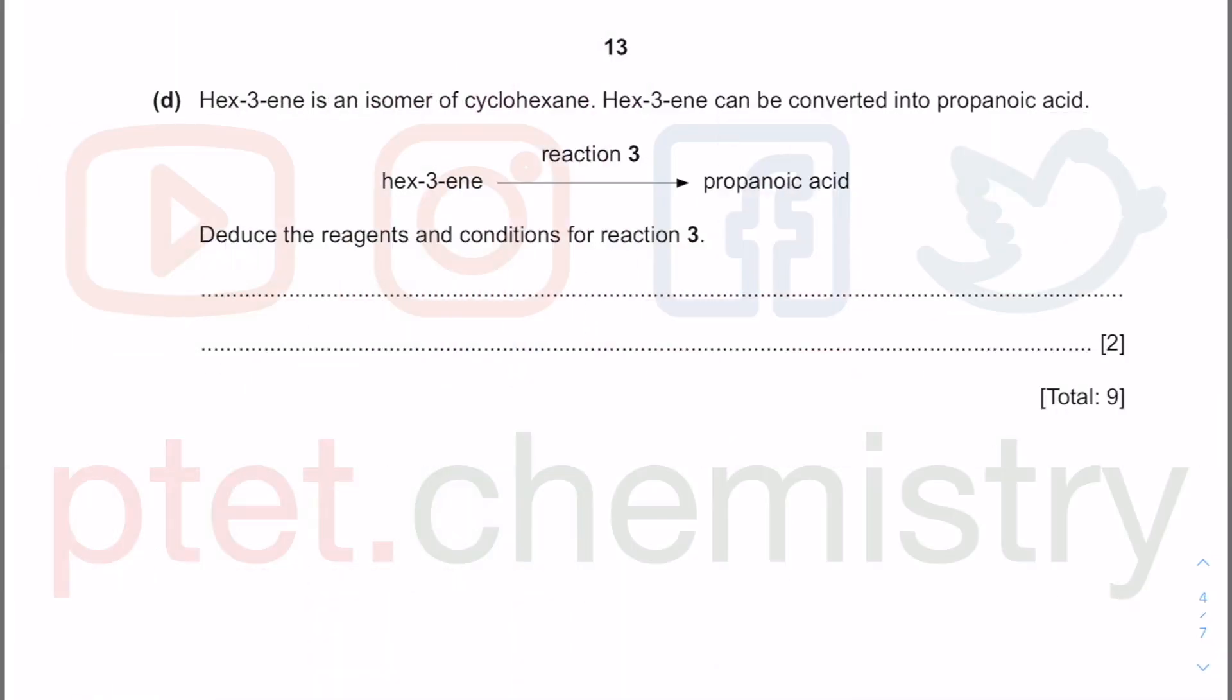This next question - hex-3-ene is an isomer of cyclohexane. Cyclo is basically cyclic so it exists as a ring. Then you have hexane which is an alkane, so that is saturated. Now we have hex-3-ene - hex is one, two, three, four, five and six. Hex-3-ene so my double bond is between three and four. I don't know whether I have the cis or the trans, I don't think it matters. What I'm going to do is I will now have propanoic acid which is three carbon carboxylic acid - one, two and three. This seems to be the only product there.